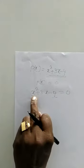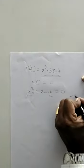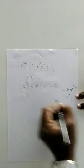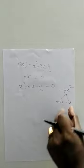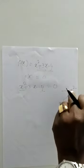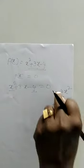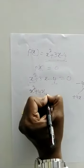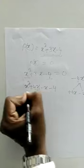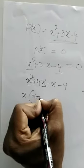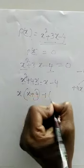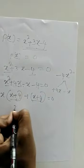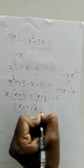Then resolve into factors. Multiply the first term and last term — it becomes minus 4x squared. This can be split as plus 4x minus x, so you write x squared plus 4x minus x minus 4. Taking common factors: x is common in the first two terms giving x plus 4, and minus 1 is common in the last two terms giving x plus 4, so the result is x plus 4 into x minus 1 equals 0.